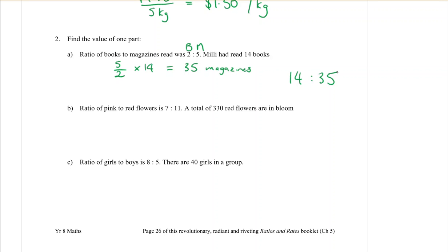Let's do part B. The ratio of pink flowers to red flowers is 7 to 11, so that's the pink and that's the red. If I have a total of 330 red flowers, I'm wanting to find out how many pink flowers I'm going to have. So what I want to do is work out the rate of pink per red. So pink is 7 per red which is 11. If I then times that by the 330 red flowers, there'll be 210 excellent pink flowers.